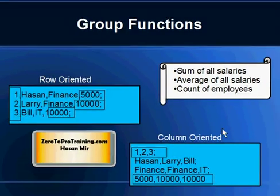So you've seen how column-oriented structure gives better performance when doing aggregation functions like sum and average on certain columns. Row-oriented results in less performance for these queries because you have to do more reads, and each read is costly because it takes time.